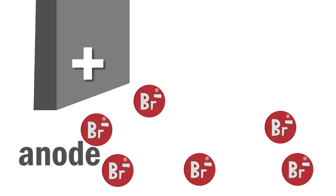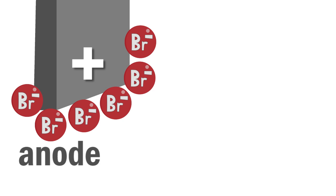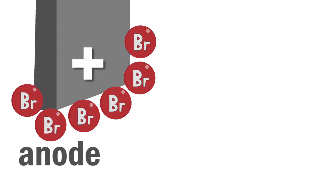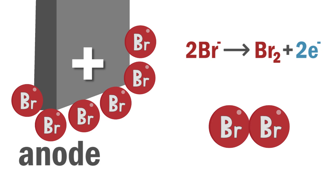At the anode or positive electrode, the bromide ions will each lose a single electron and become bromine atoms. And like the chlorine atoms, they will pair up to form bromine molecules.